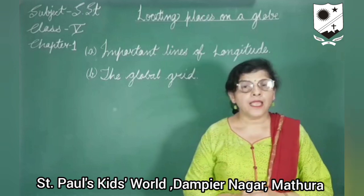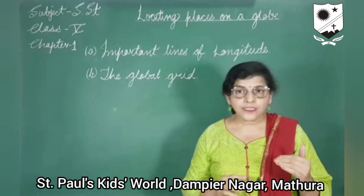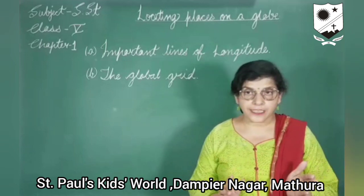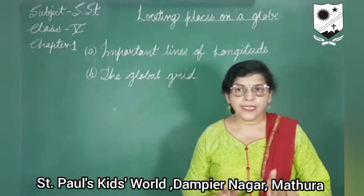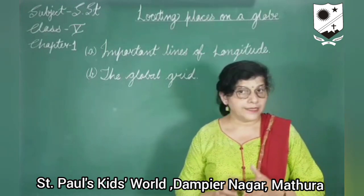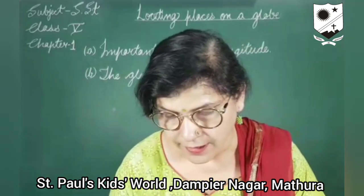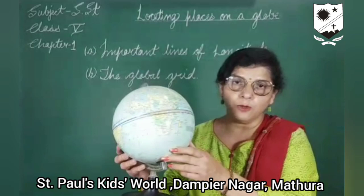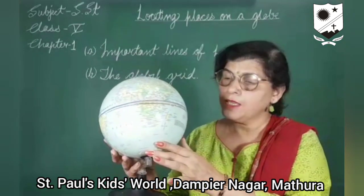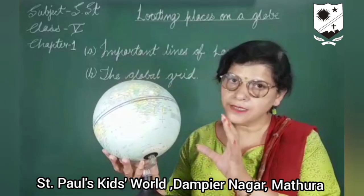Now I want to tell you about the Global Grid. The network formed by the intersecting lines of latitudes and longitudes is called the Global Grid. I will show you this on the globe as well. In this globe, which I also showed you in the last video, I have shown you some important latitudes.